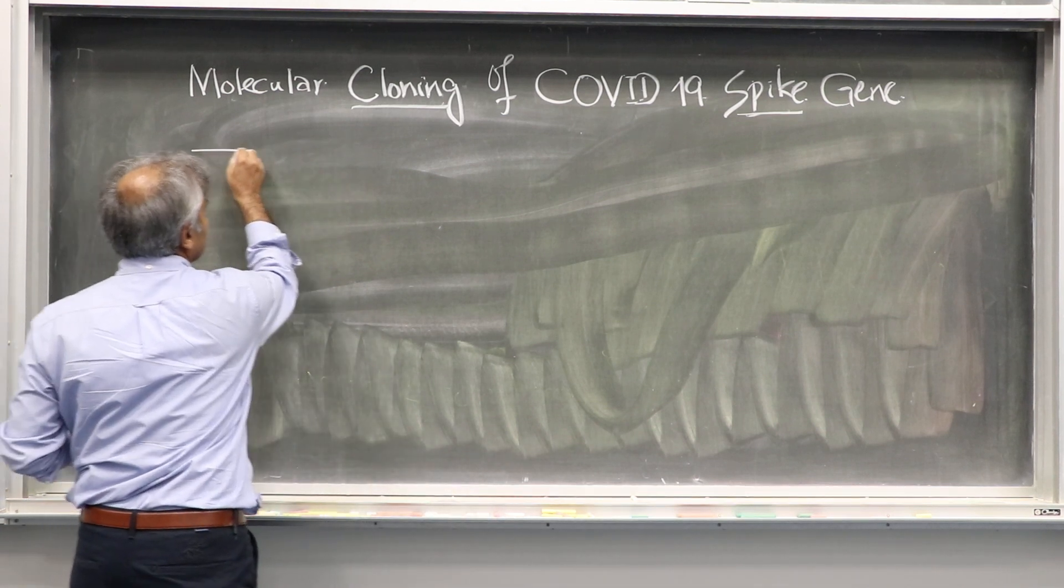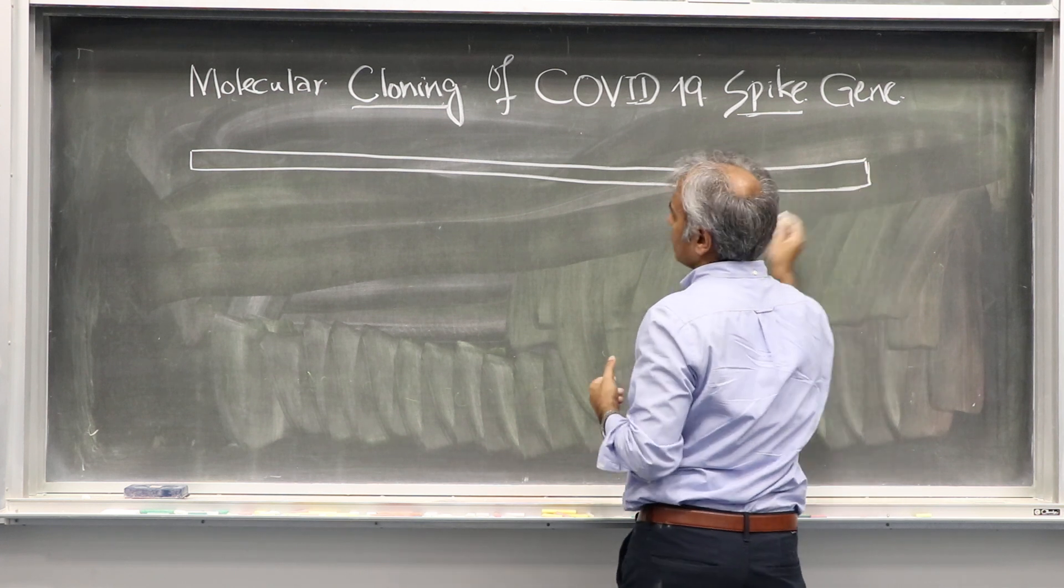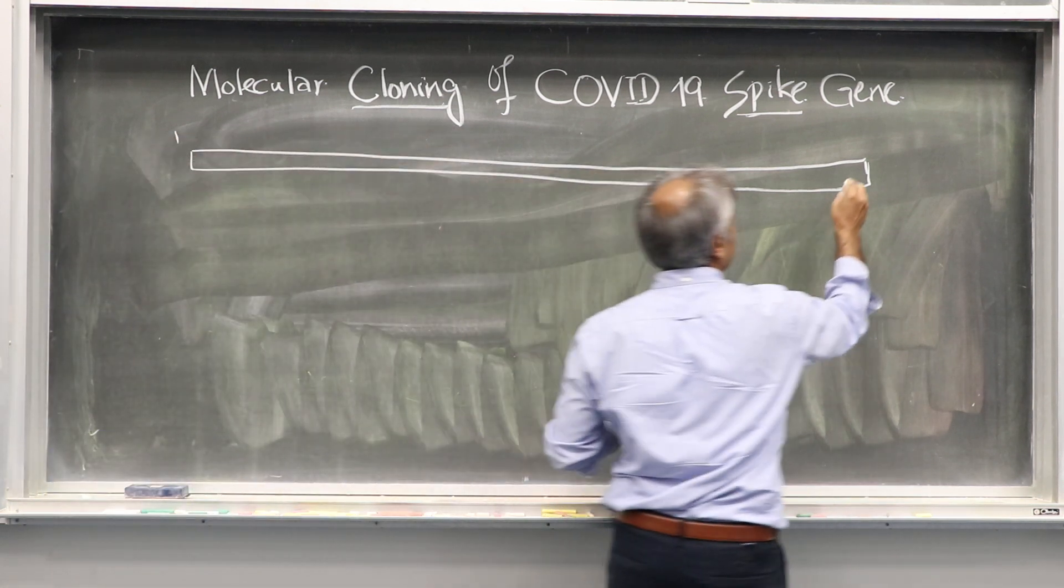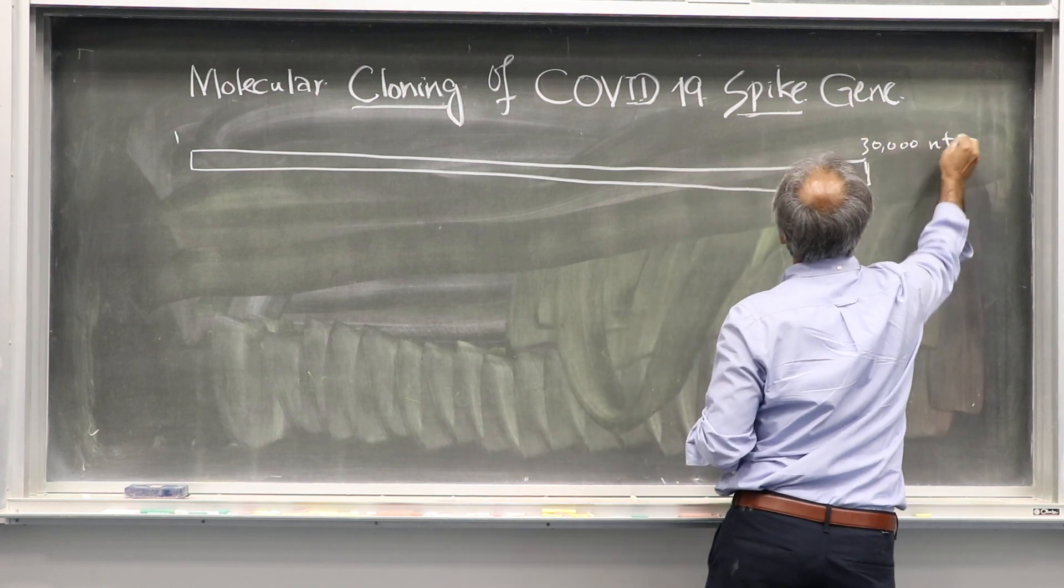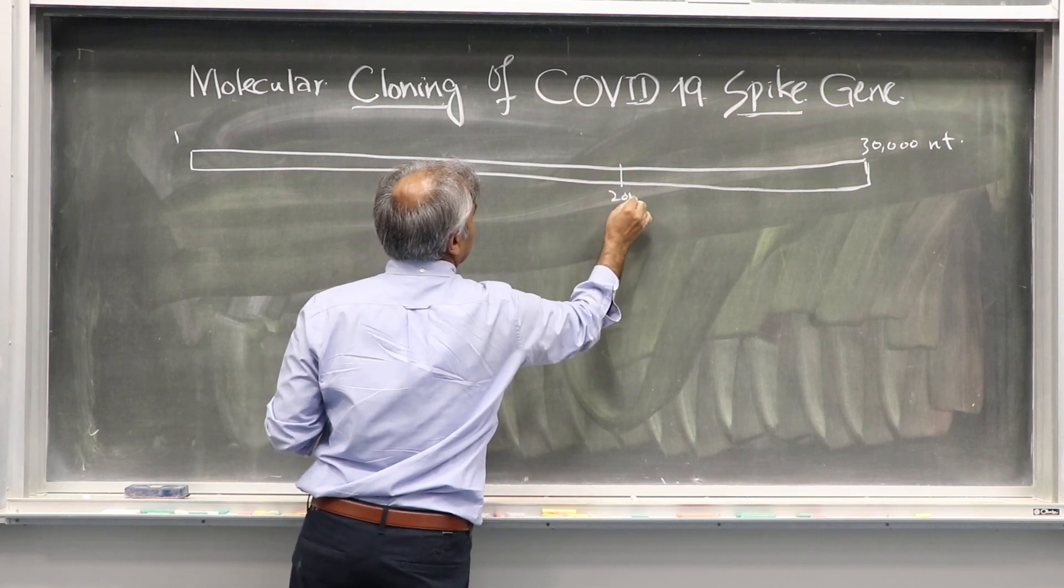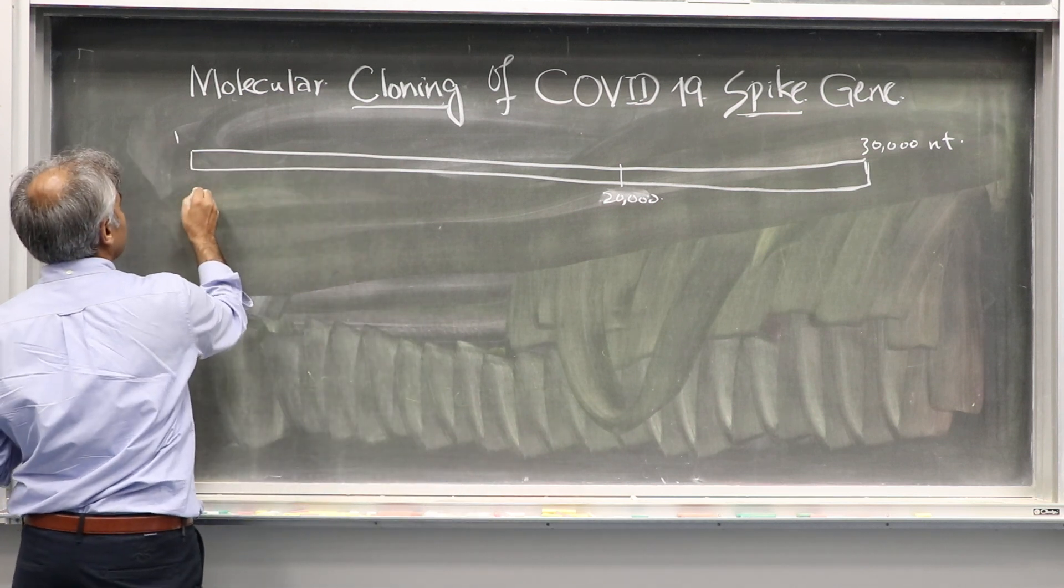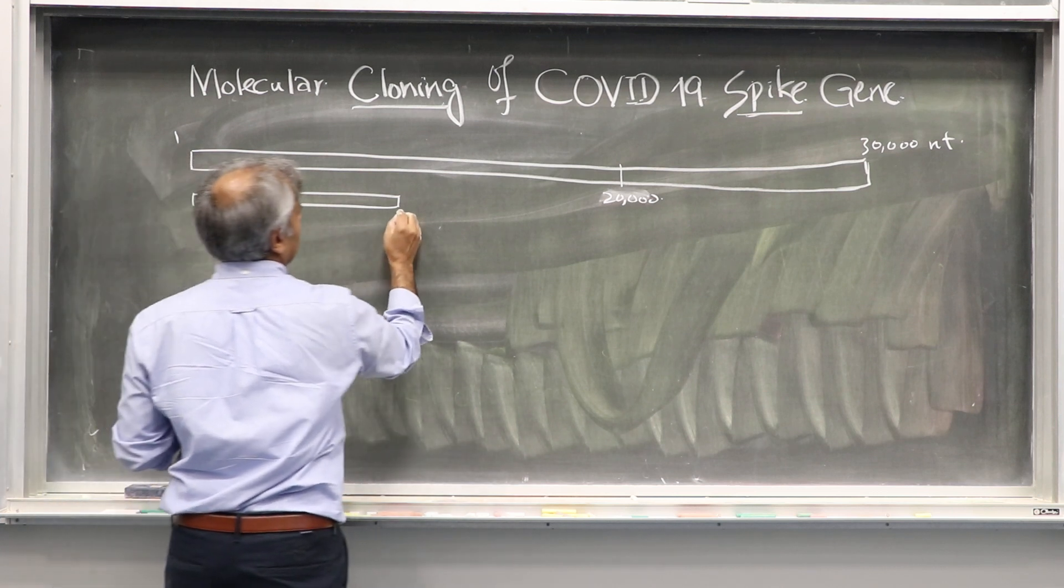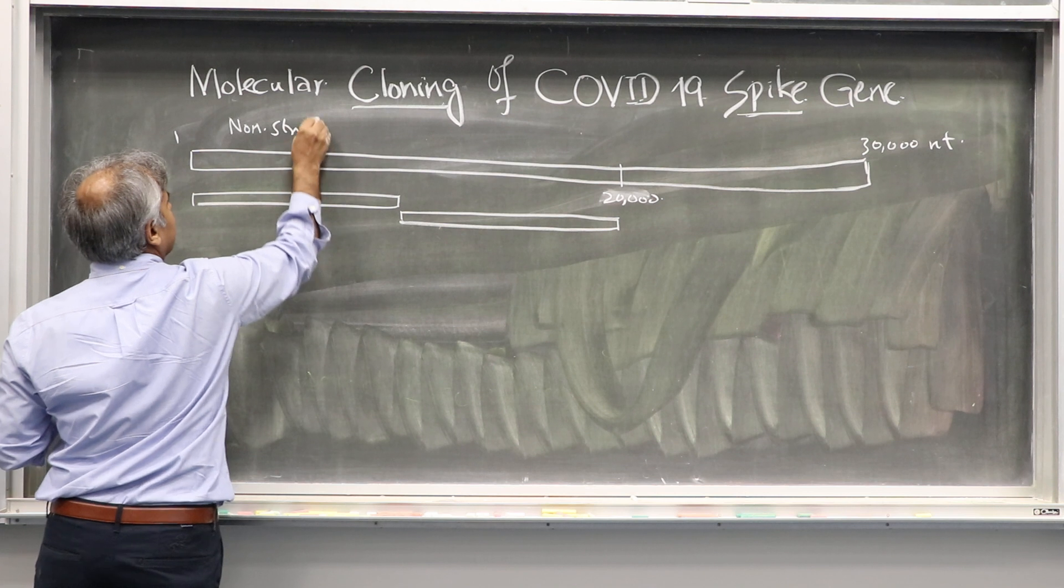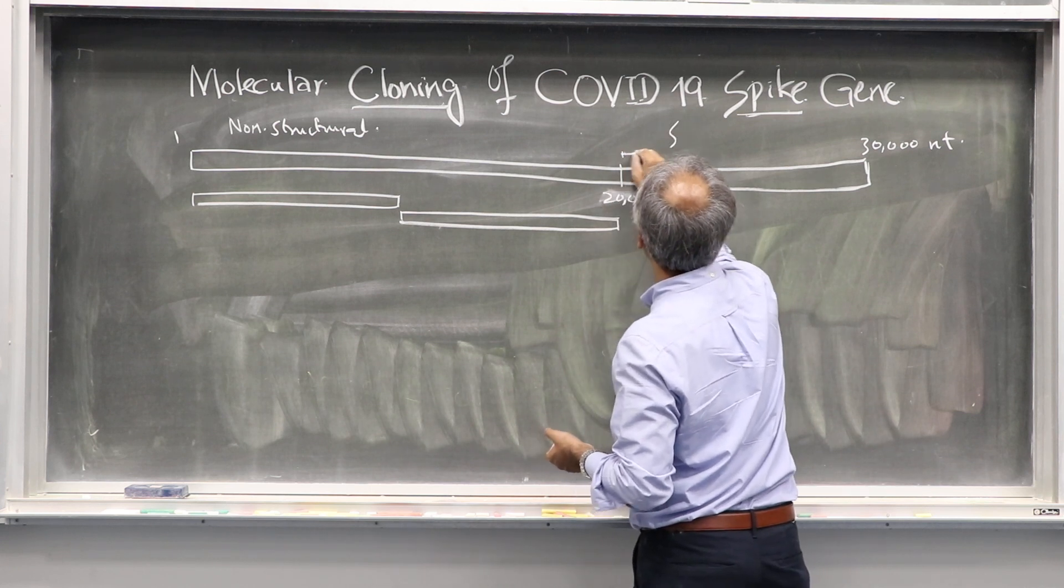Before going there, we have to go very systematically. We have to see the genome of the virus. If I draw horizontally, this is the RNA of coronavirus. This is a plus-strand RNA virus and RNA is a single-stranded molecule. This total 30,000 nucleotides are there in this virus. It has different regions.